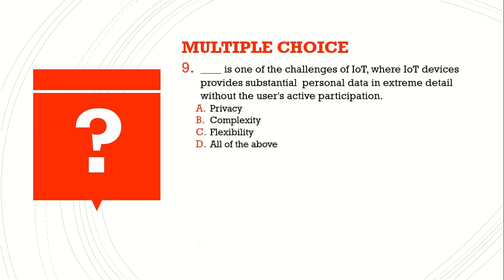Question number nine: blank is one of the challenges of Internet of Things, where IoT devices provide substantial personal data in extreme detail without users' active participation. A) privacy, B) complexity, C) flexibility, D) all of the above. The answer is A) privacy.